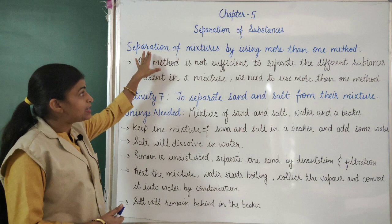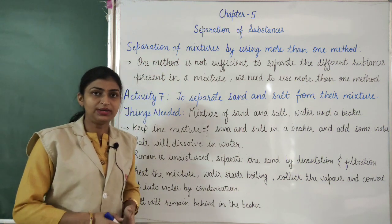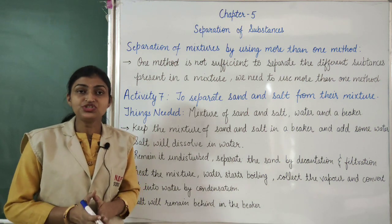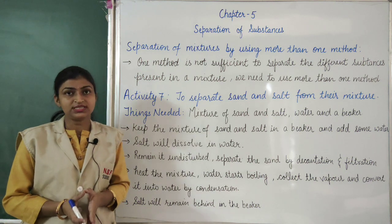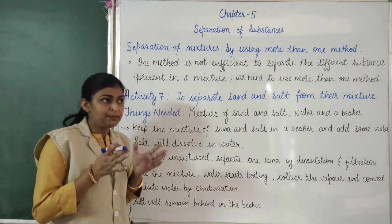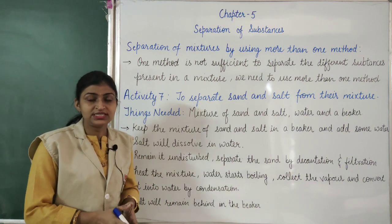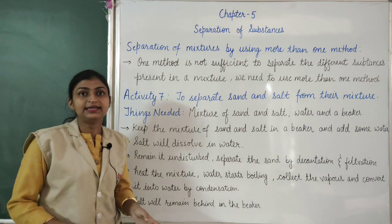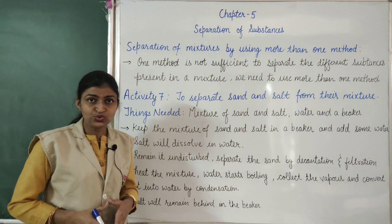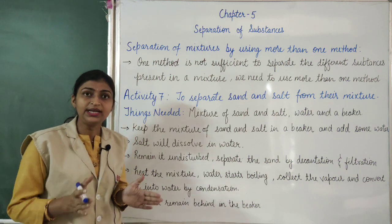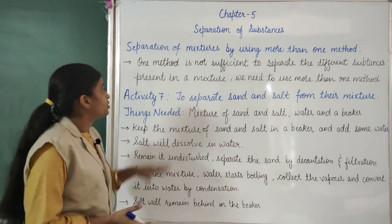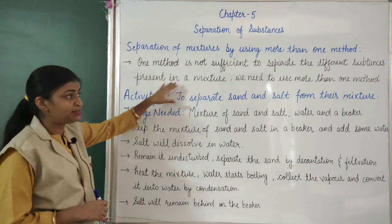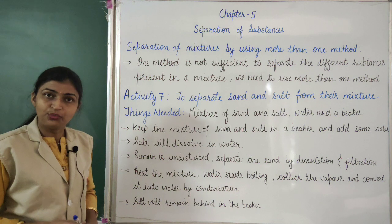Our today's topic is separation of mixtures by using more than one method. We use more than one method when one method is not sufficient to separate all the components present in the mixture. The properties of all the components are different, so we need different methods to separate them. Using a single method, we cannot separate all of them.